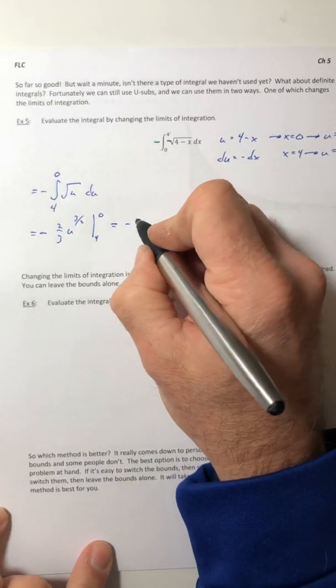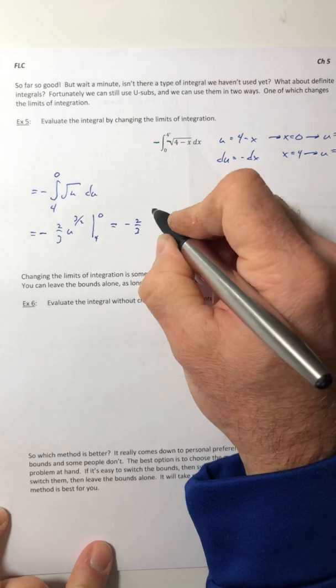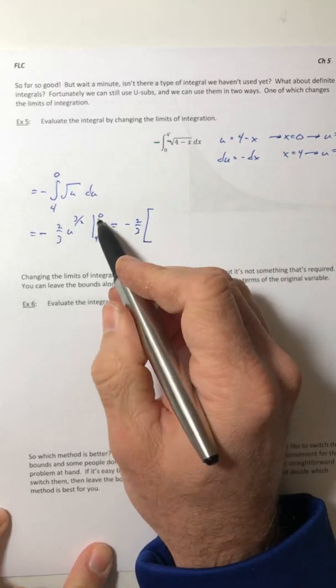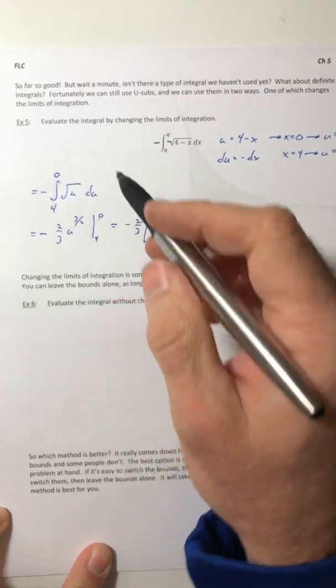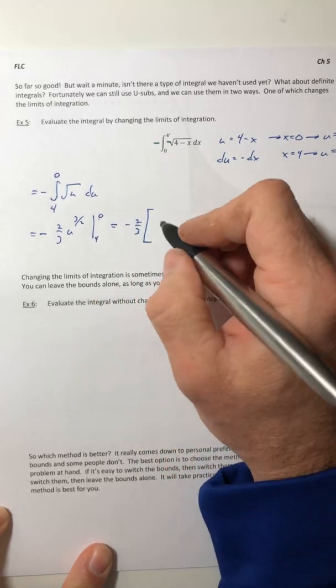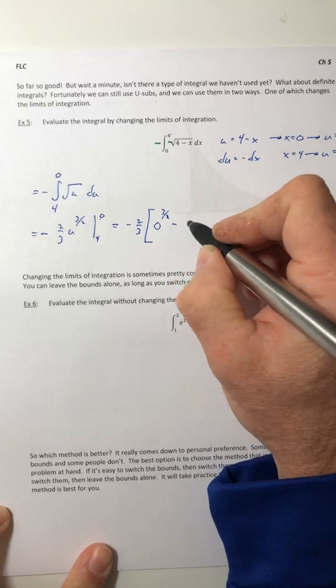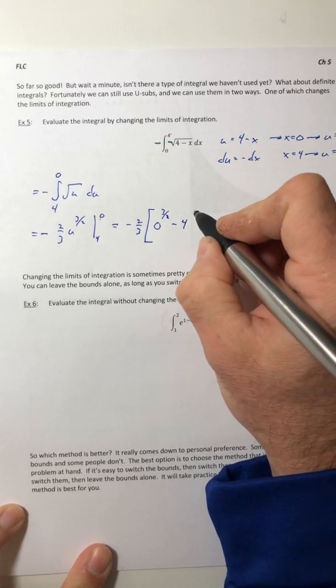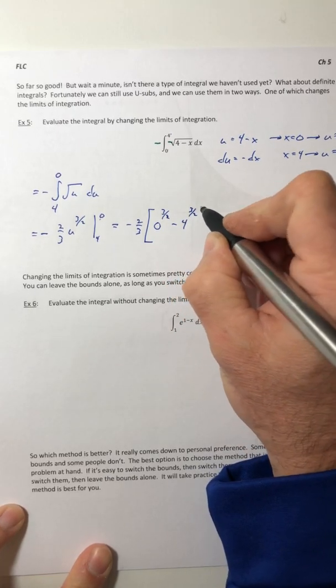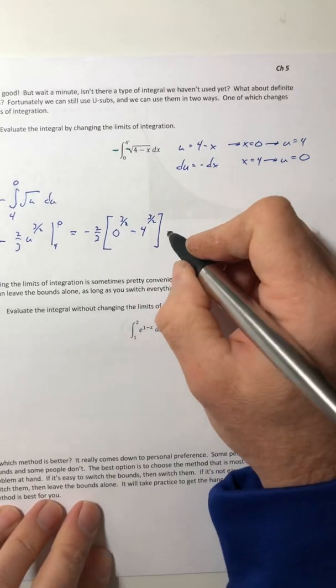So we'll leave the negative two thirds out on the front, and then we'll plug in the zero and then plug in the four. So the zero would be this and then minus four to the three halves.